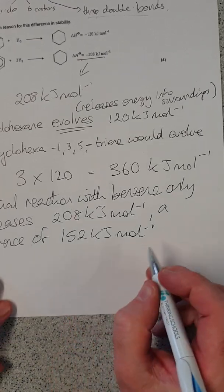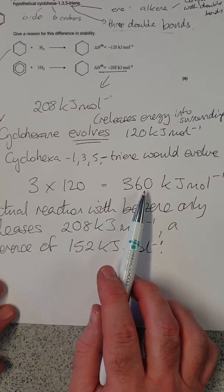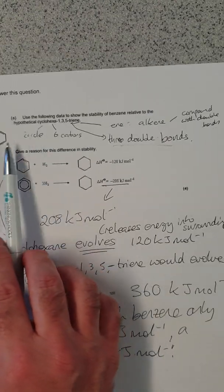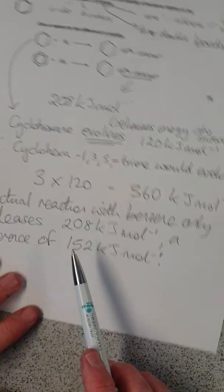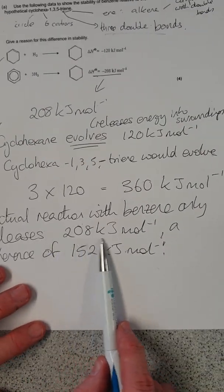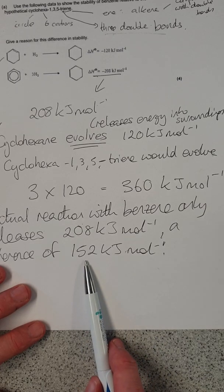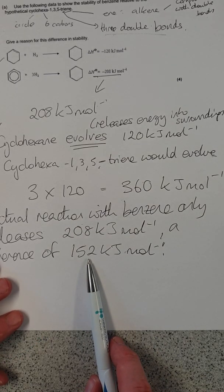152 kilojoules per mole. That's how much. So rather than giving us our 360 kilojoules per mole, which is what we expect with this structure, it only releases 208 kilojoules per mole, a difference of 152. What does that mean?